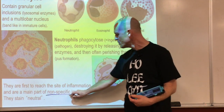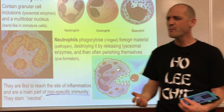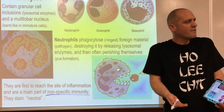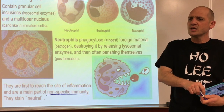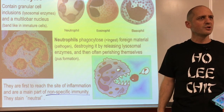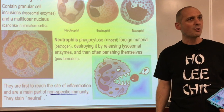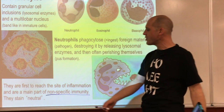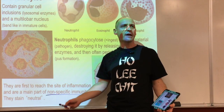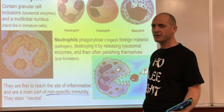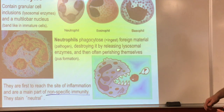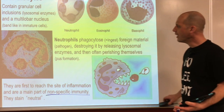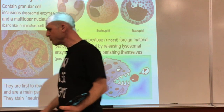Neutrophils reach the site of inflammation first and are a main part of non-specific immunity. Non-specific immunity is what responds generally to any infection, whereas specific immunity - like the memory of chickenpox - responds to a specific pathogen. The concept of specific immunity is the basis of immunizations and vaccinations.